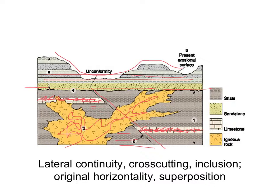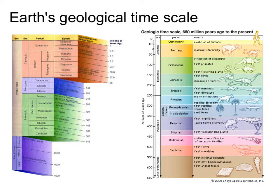That's what geologists are currently working with on Mars. These processes of relative and absolute dating have allowed us to build up a geological timescale for the Earth — the Precambrian, Paleozoic, Mesozoic, Cenozoic — those major periods are represented in rocks and fossils that allow us to reconstruct the history of geology and life on Earth. We want to do the same thing on Mars.